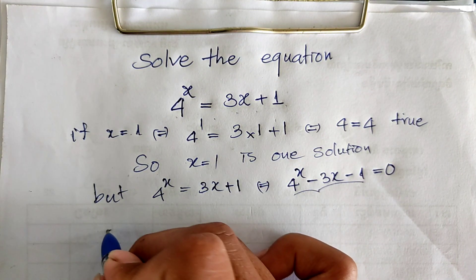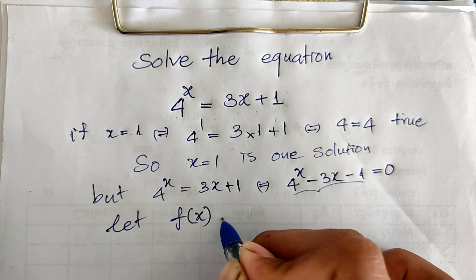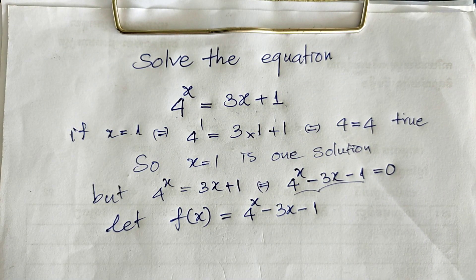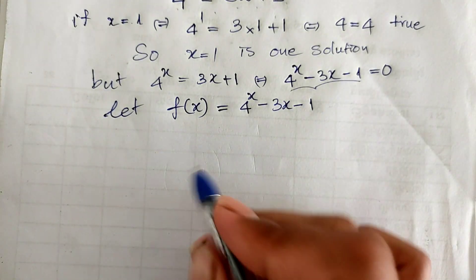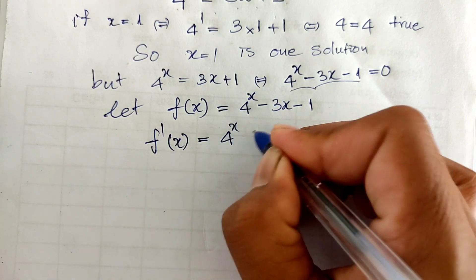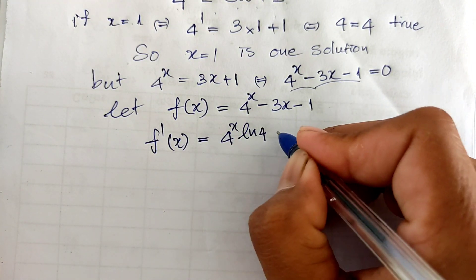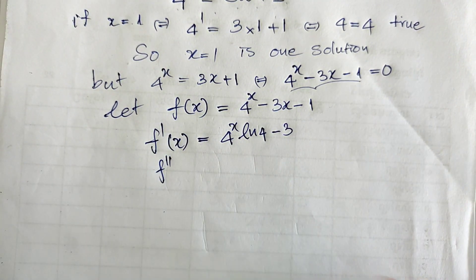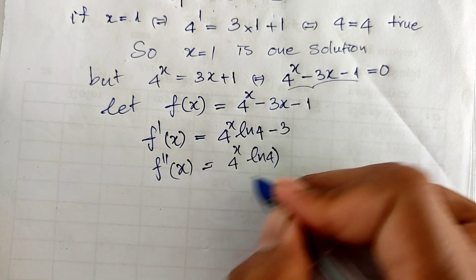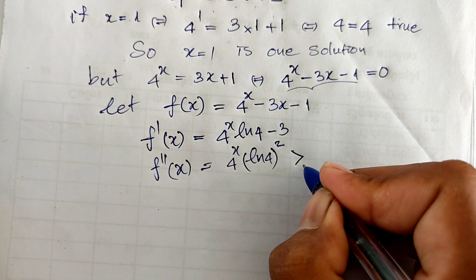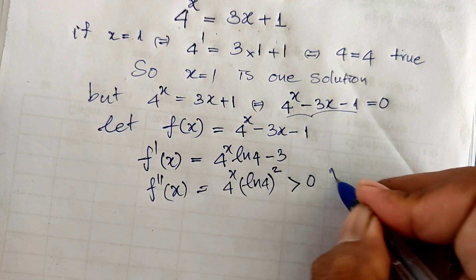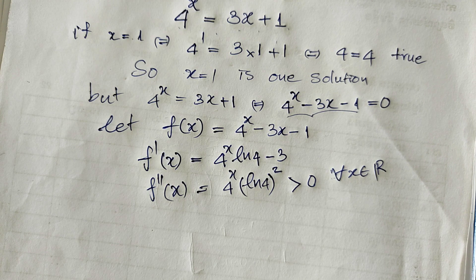And so I let f(x) = 4^x - 3x - 1. If I derivative it, it's equal 4 power x logarithm of 4 minus 3. The second derivative is 4 power x logarithm of 4 squared, which is positive for all x in real numbers.